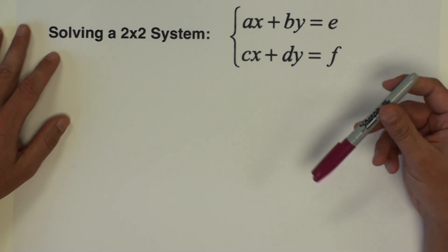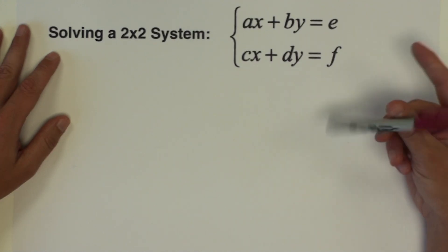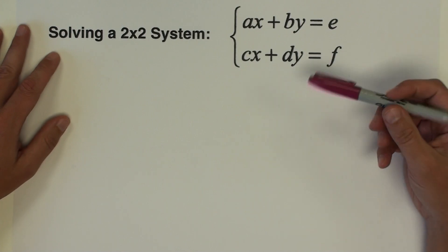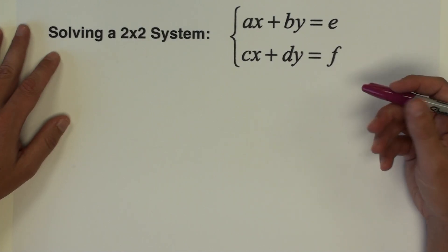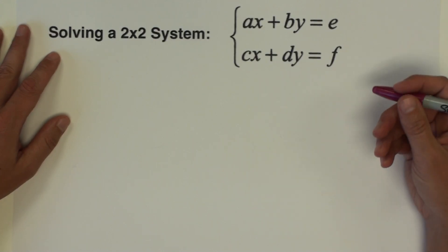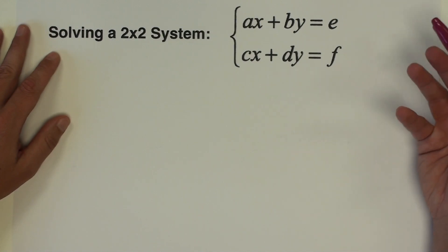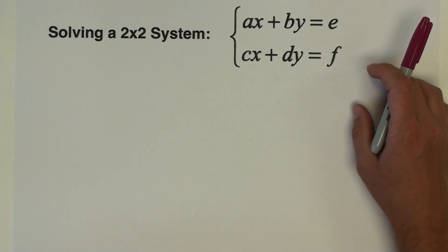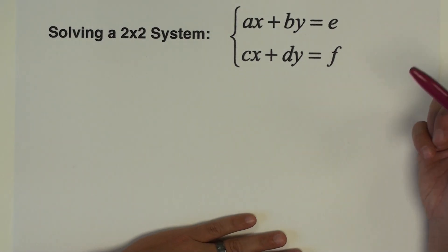To get started with Cramer's Rule, we're going to look at a two by two system of equations. Once we go over the pattern and practice it with two by twos, it'll be pretty simple to extend this process to a three by three system of equations. So let's talk about the formula and the pattern we're going to use to solve for x and y.